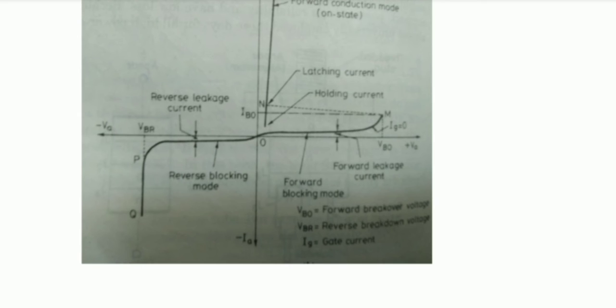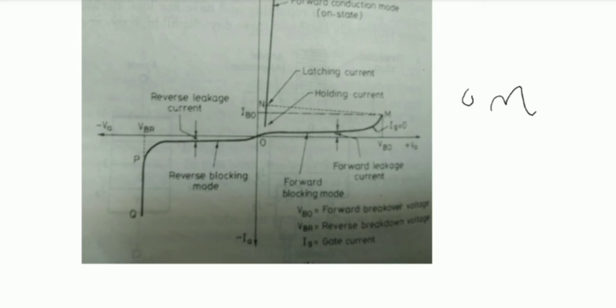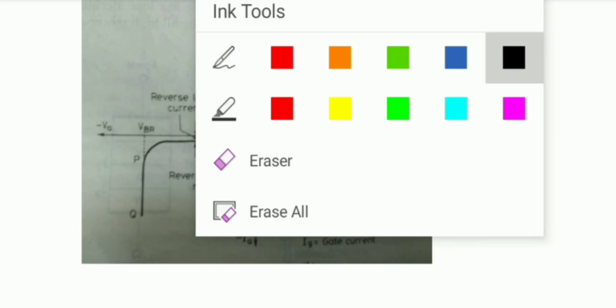In the forward blocking mode, when the anode is positive with respect to the cathode with the gate circuit open, the thyristor is forward biased. Junctions J1 and J3 are forward biased but junction J2 is reverse biased. Since the forward leakage current is small, the SCR offers high impedance, so the thyristor is treated as an open switch even in the forward blocking mode.